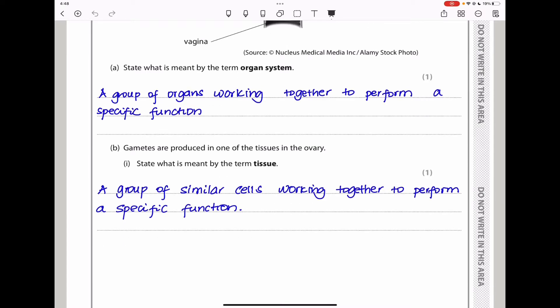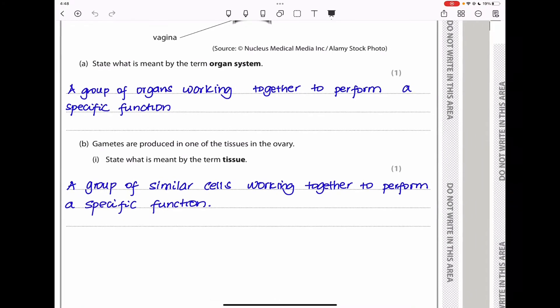The next part says gametes are produced in one of the tissues in the ovary. State what is meant by the term tissue. A tissue is a group of similar cells working together to perform a specific function. It is very important that you write the word similar cells, because if you just say a group of cells, that could be misleading.